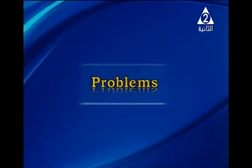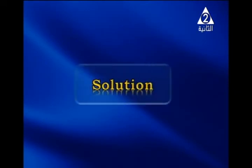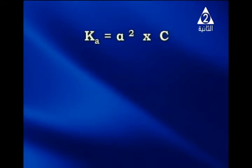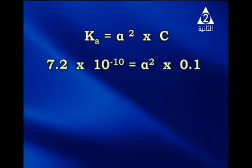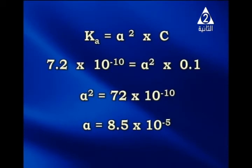Problem 1: Calculate the degree of dissociation of a 0.1 molar solution of HCN at 25°C, given Ka = 7.2 × 10⁻¹⁰. Solution: By Ostwald's law, Ka = alpha² × c. So 7.2 × 10⁻¹⁰ = alpha² × 0.1. Therefore alpha² = 7.2 × 10⁻⁹, so alpha = 8.5 × 10⁻⁵.